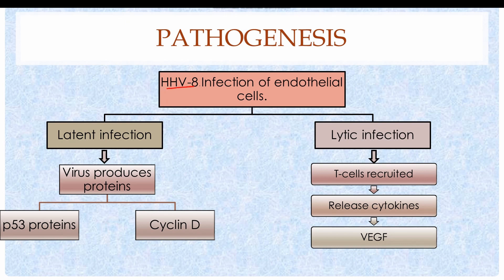In HHV-8 infection, initially only a few endothelial cells carry the infection, but in later stages almost all endothelial cells are infected. HHV-8 can cause either a latent infection — where the infection is present but produces no signs or symptoms — or a lytic infection, which causes damage to endothelial cells. In latent infection, HHV-8 produces certain proteins which inhibit p53, a tumor suppressor gene that normally induces apoptosis. Inhibition of p53 results in loss of apoptosis, which favors proliferation of endothelial cells.